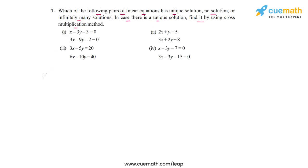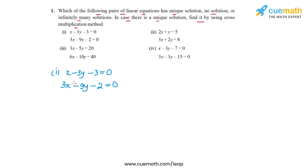Let's start with the first part. The pair of linear equations is x minus 3y minus 3 equal to 0, and 3x minus 9y minus 2 equal to 0. The coefficients of x are 1 and 3, so a1 by a2 is 1 by 3. The coefficients of y are minus 3 and minus 9, so b1 by b2 is minus 3 by minus 9, which is 1 by 3.